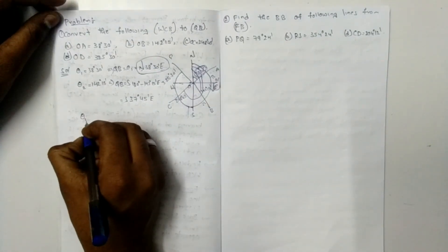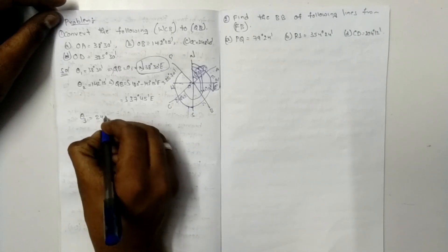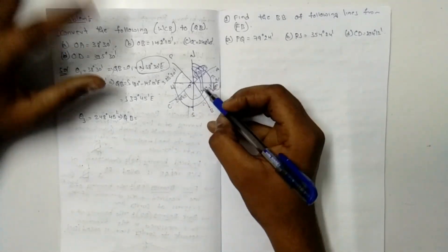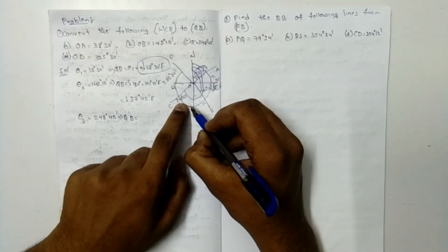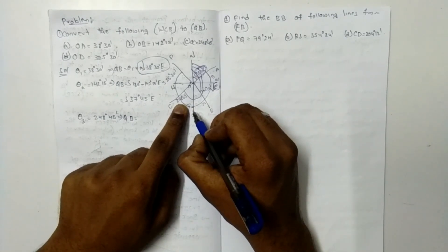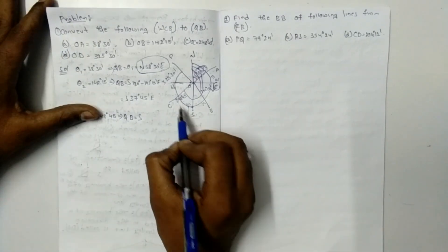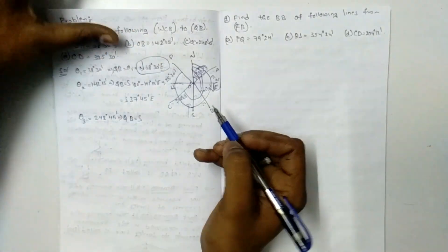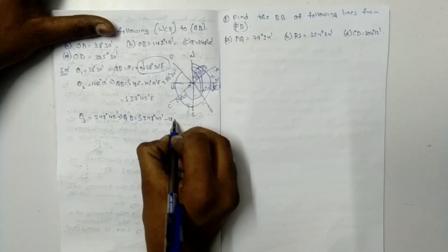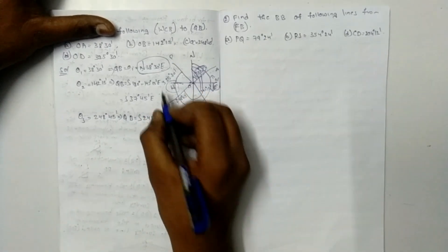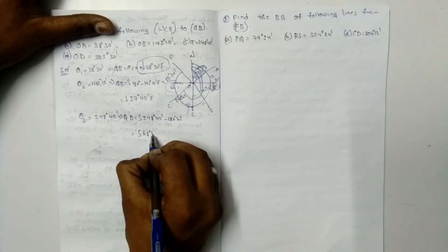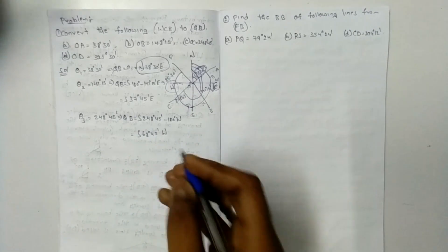Theta 3: OC = 248 degrees 45 minutes. The third quadrant is south-west, between 180 and 270 degrees. We calculate: 248 degrees 45 minutes minus 180 degrees equals 68 degrees 45 minutes. So the quadrantal bearing of OC is South 68°45' West.